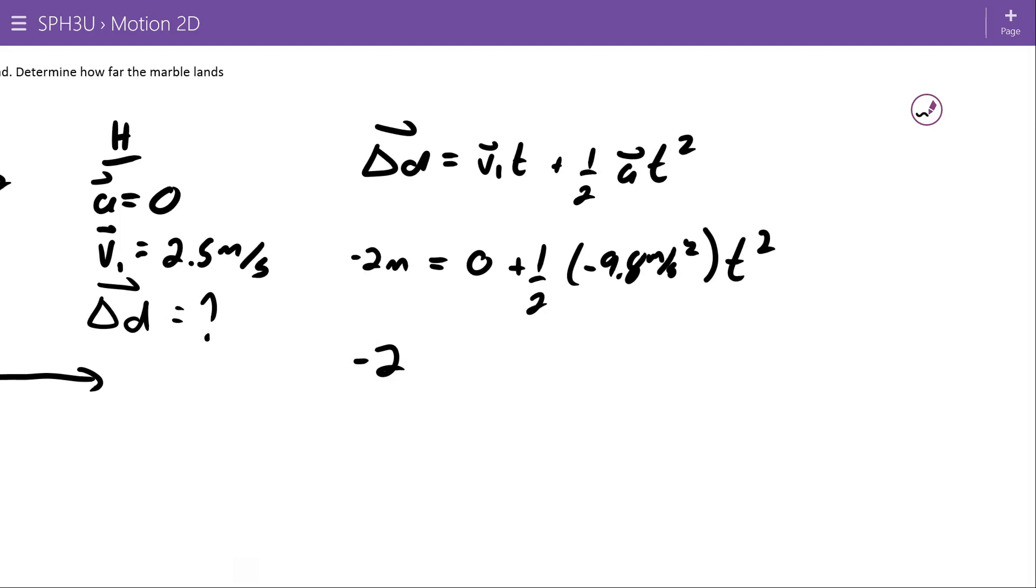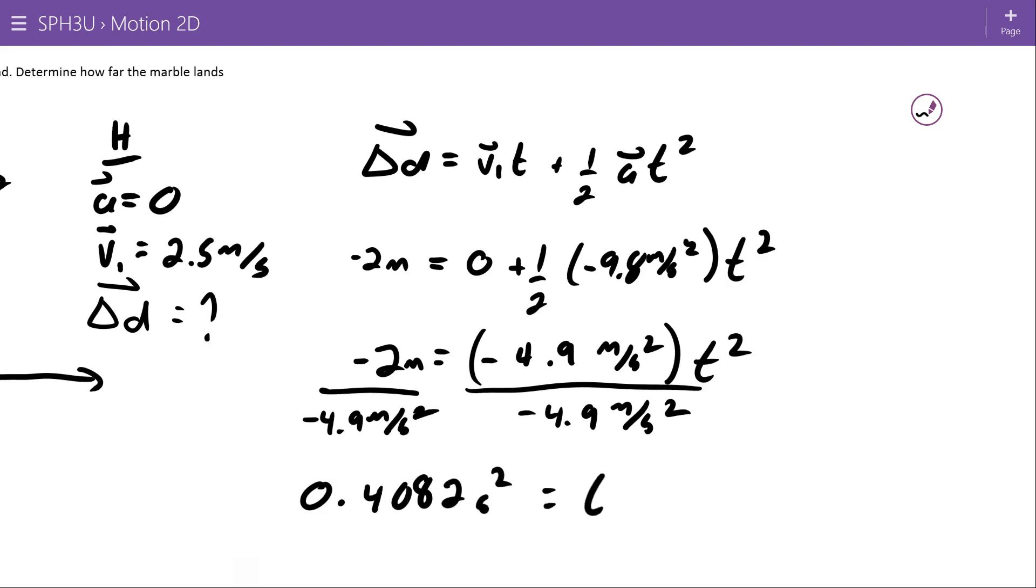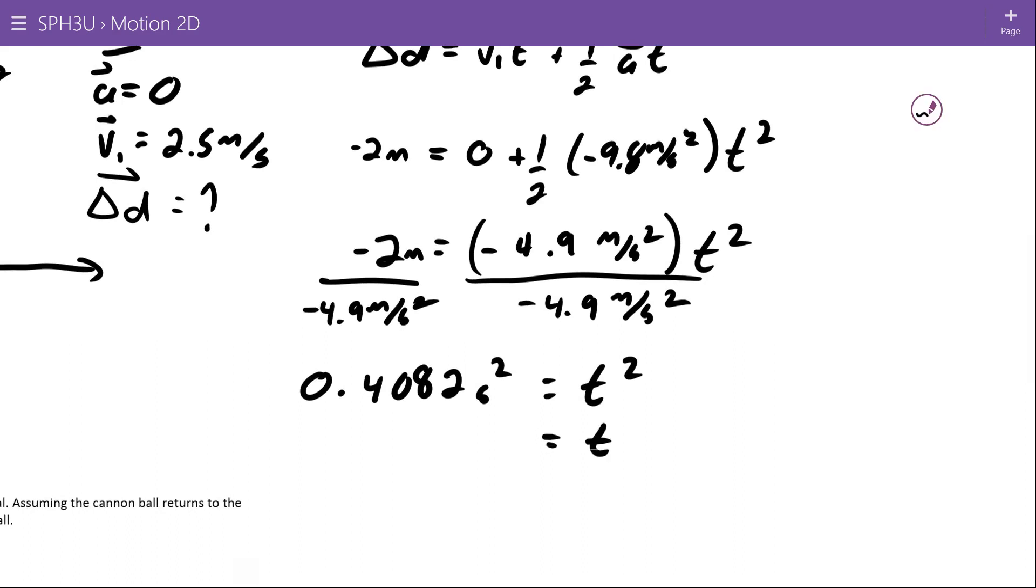So just getting rid of my negative and doing the 1 half here, I get negative 4, and keep my units around, try and be as proper as possible. Negative 4.9 meters per second squared, and that's times t squared. And then I'm going to divide both sides by negative 4.9 meters per second squared. I'll get 0.4082 second squared is equal to t squared. And then when I square root this, I guess I should think that I'm introducing both the positive and negative root. So this could possibly be plus or minus 0.639 seconds. But the negative time here doesn't really have any real meaning. We're only interested in the positive root. So we're just going to use 0.639 seconds.